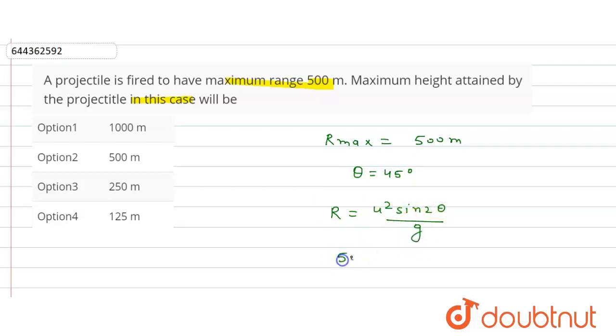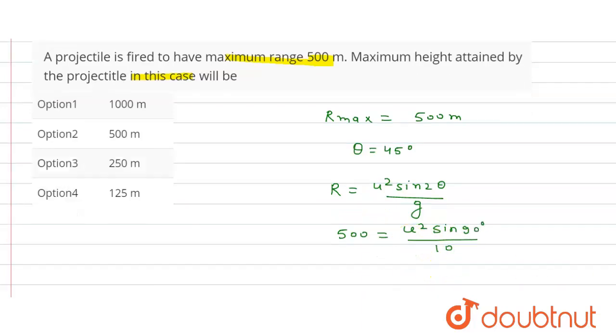So R max is 500 equals u squared sine 2 theta, means sine 90 degrees, upon g value is 10.